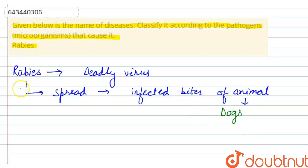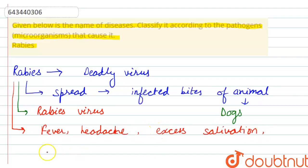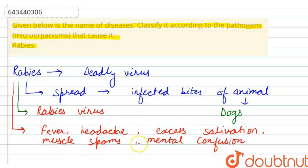The disease is rabies and it is caused by the rabies virus. The symptoms of this disease are fever, headache, excess salivation, and muscle spasms.